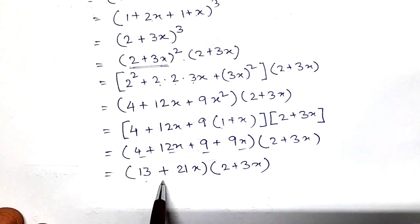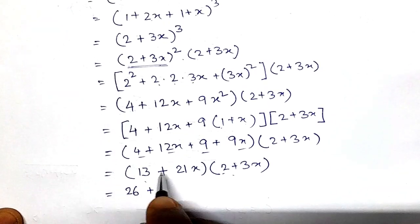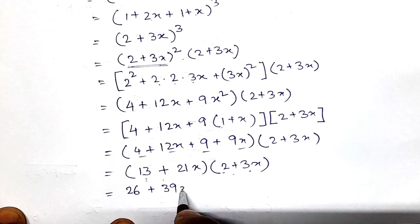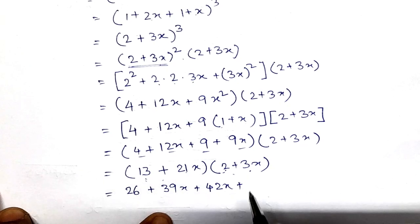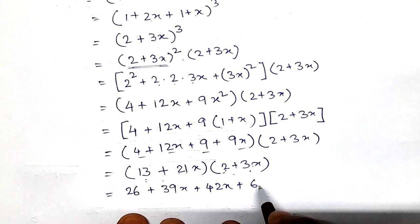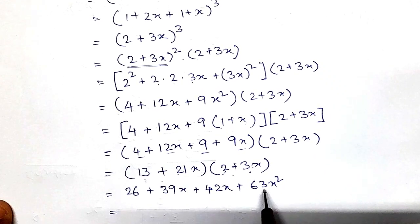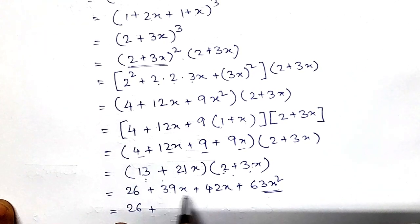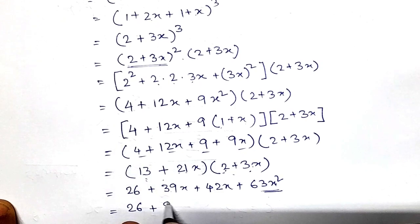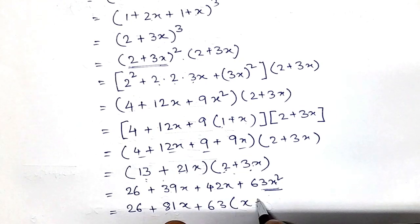Now multiplying (13 plus 21x) by (2 plus 3x): 13 times 2 is 26, plus 13 times 3x is 39x, plus 21x times 2 is 42x, plus 21x times 3x is 63x². Applying x² equals 1 plus x one last time, we substitute 63x² with 63(1 plus x), giving 26 plus 39x plus 42x plus 63 plus 63x.